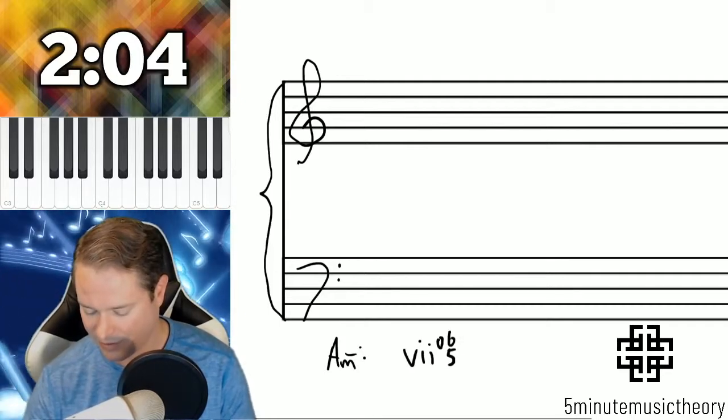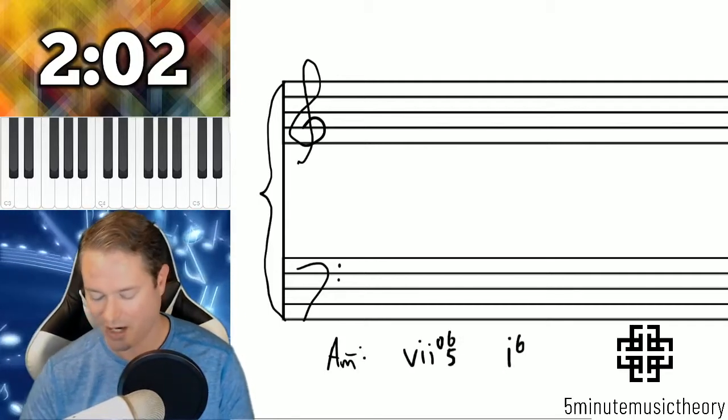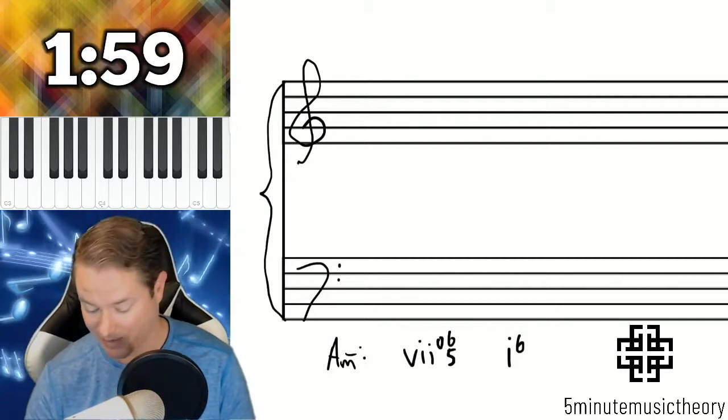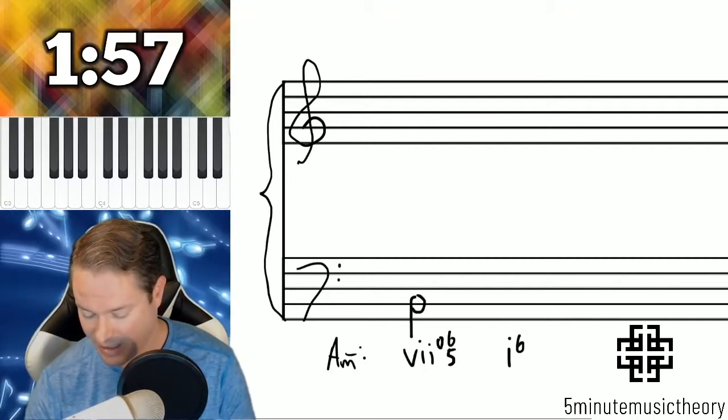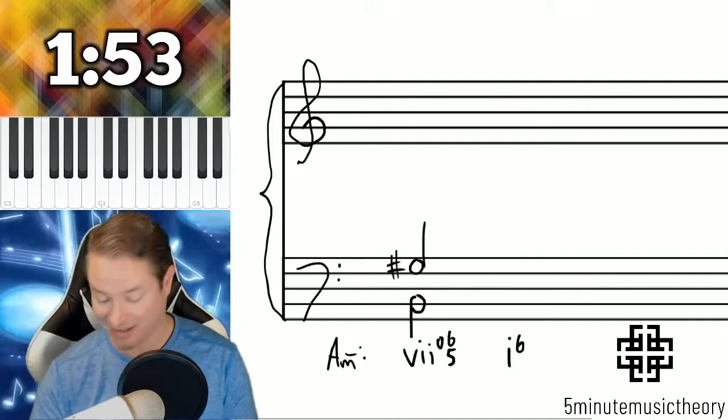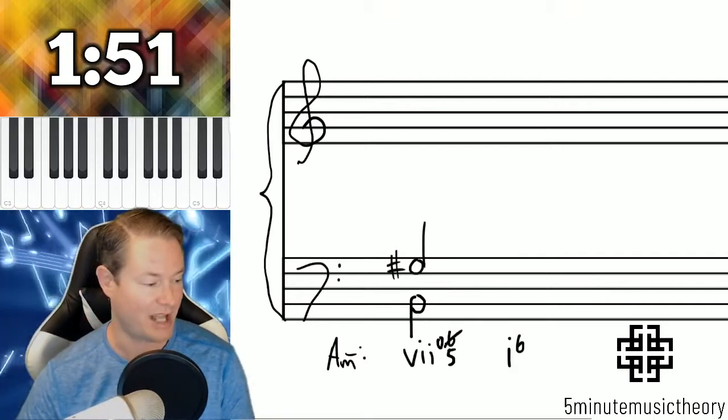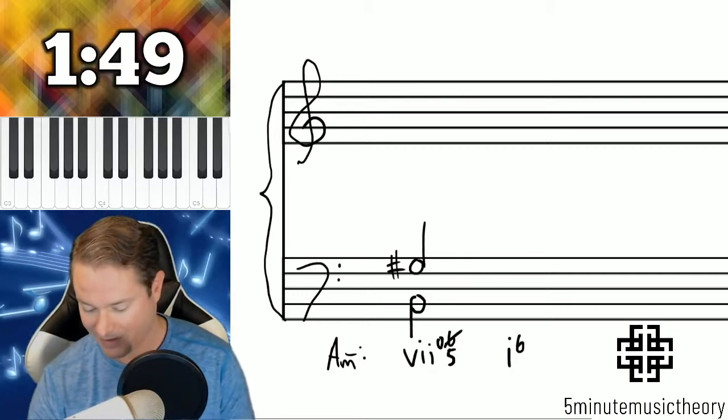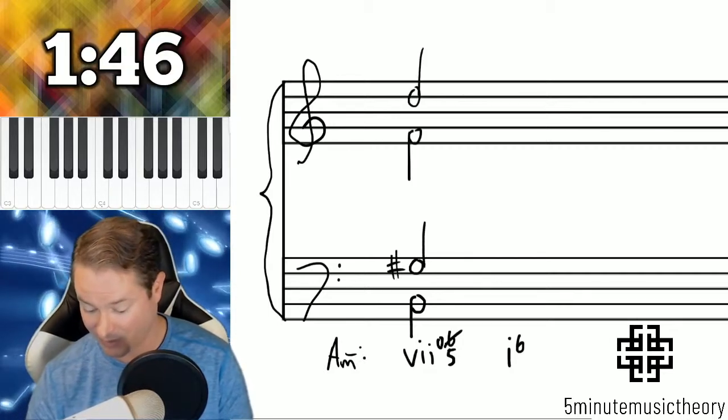And let's lead into a tonic six. So leading tone six-five, it's the same chord except the B is going to be in the bass here. So the G sharp is going to be somewhere else. I'll go ahead and I'll put it here. And since that's the sixth above the bass, I put a slash through the six. And then we have the D and the F remaining.